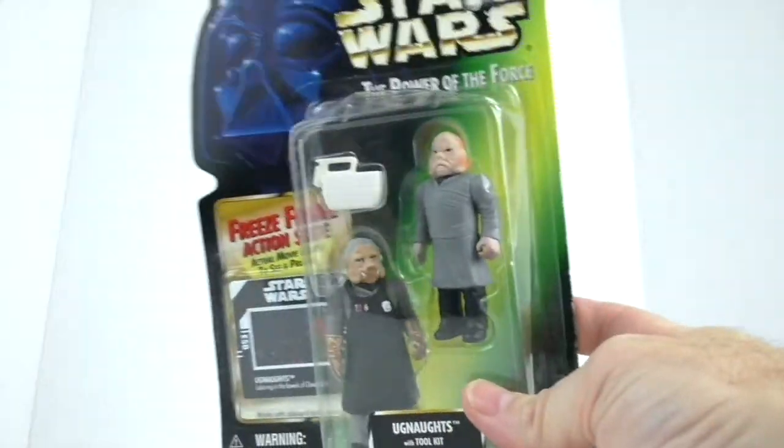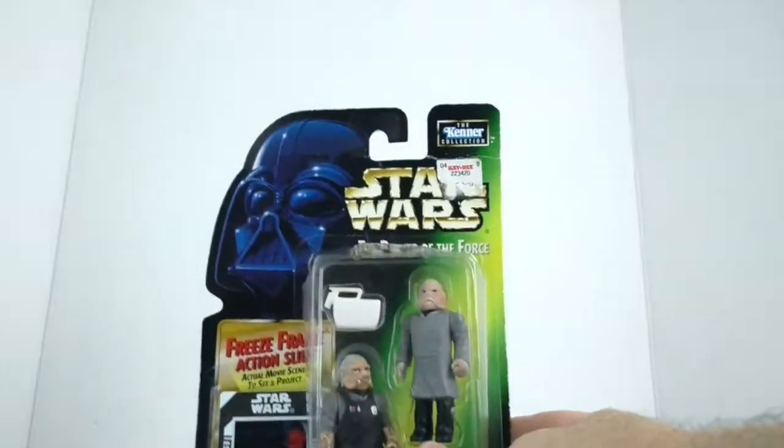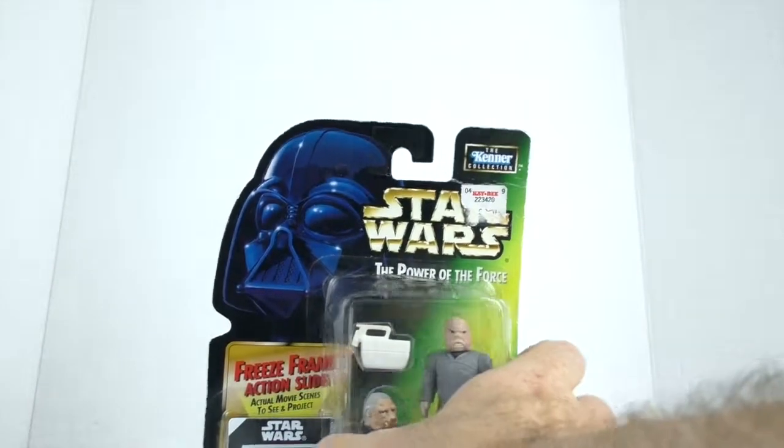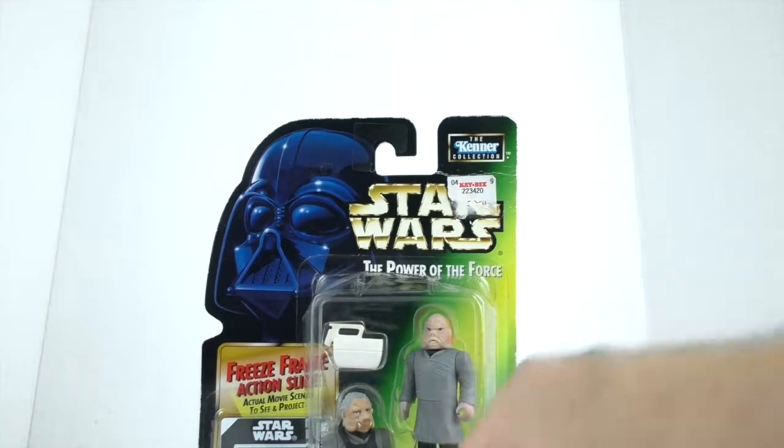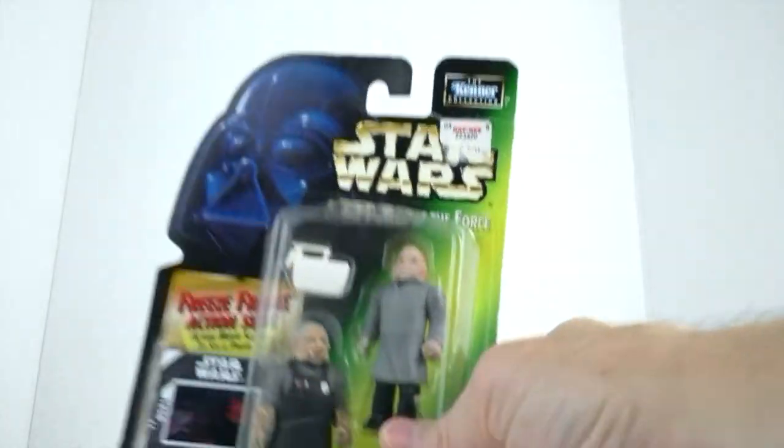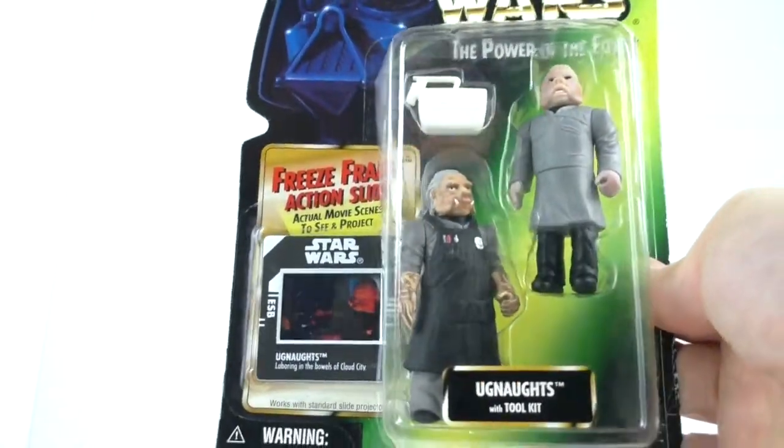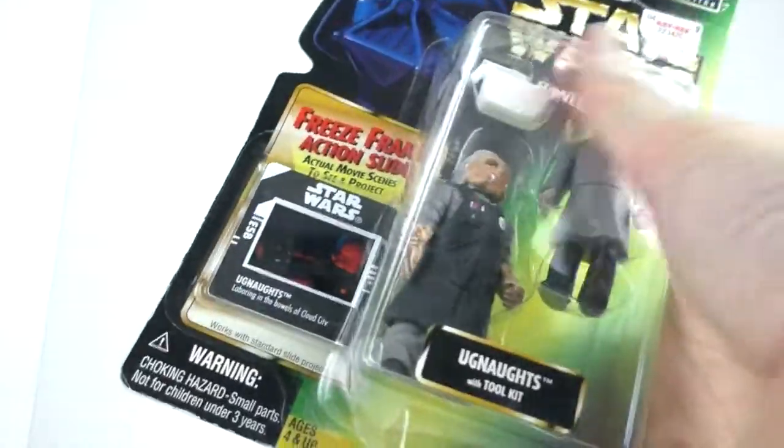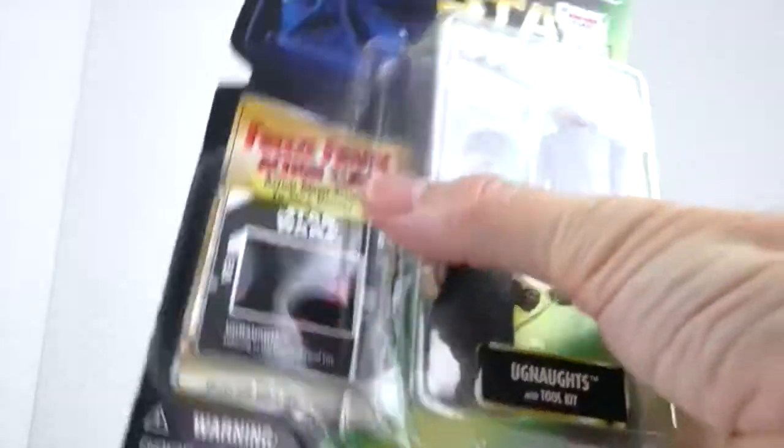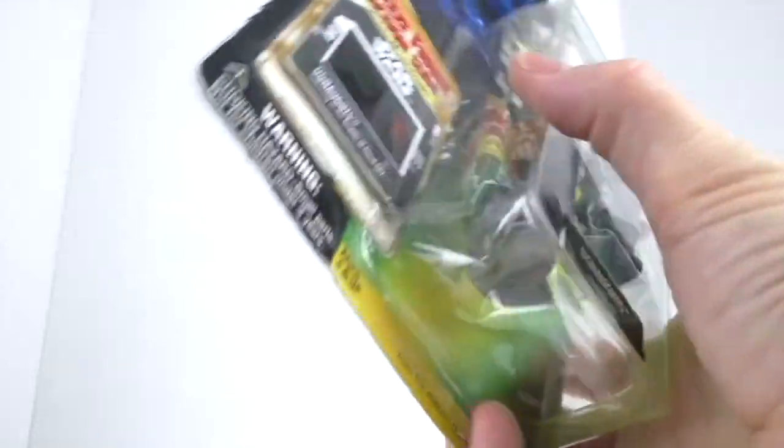Alright, here is another one that I've had for a while. This one I got at Book Off, and it's the Ugnaughts. What's really cool is that now they put these smaller figures in basically two-packs, like the Jawas - they put two Jawas in a pack.